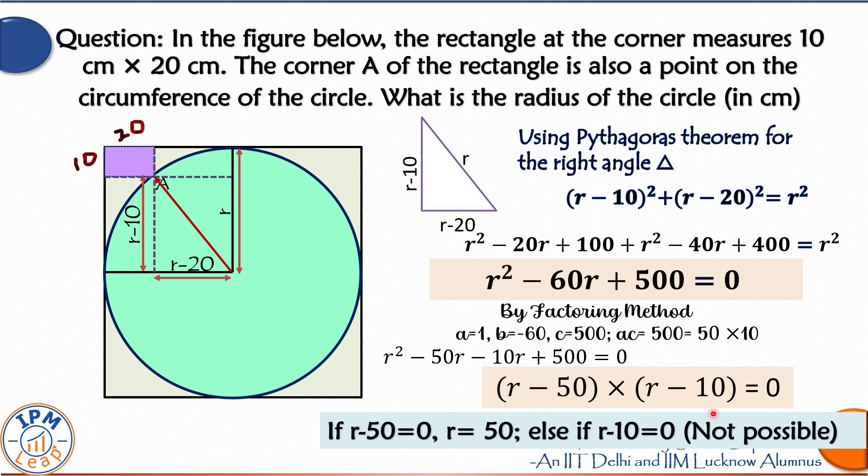Now this is not possible because if R minus 10 is equal to 0, one of the sides of our triangle would be 0. So we reject this possibility.